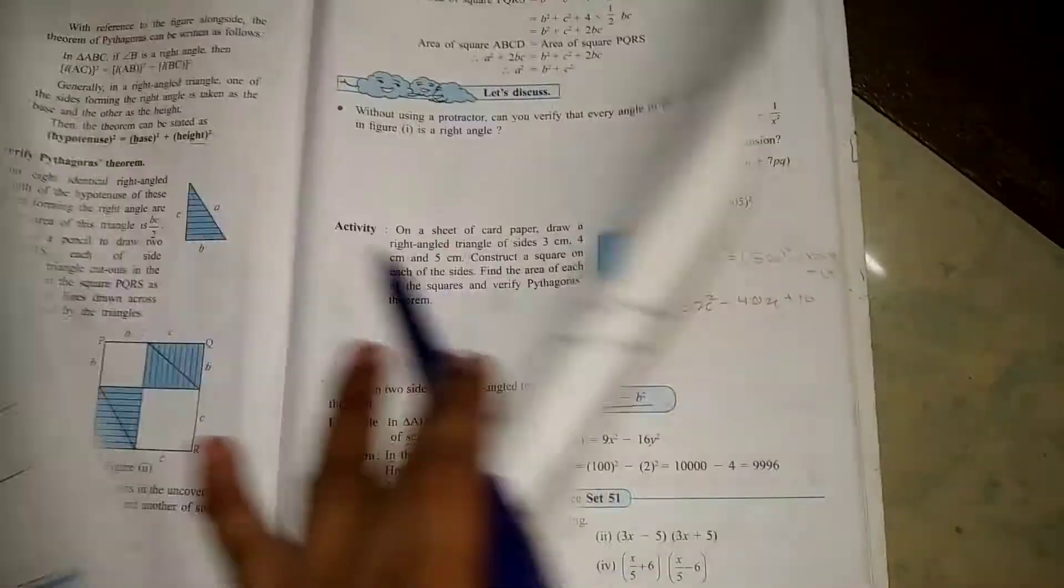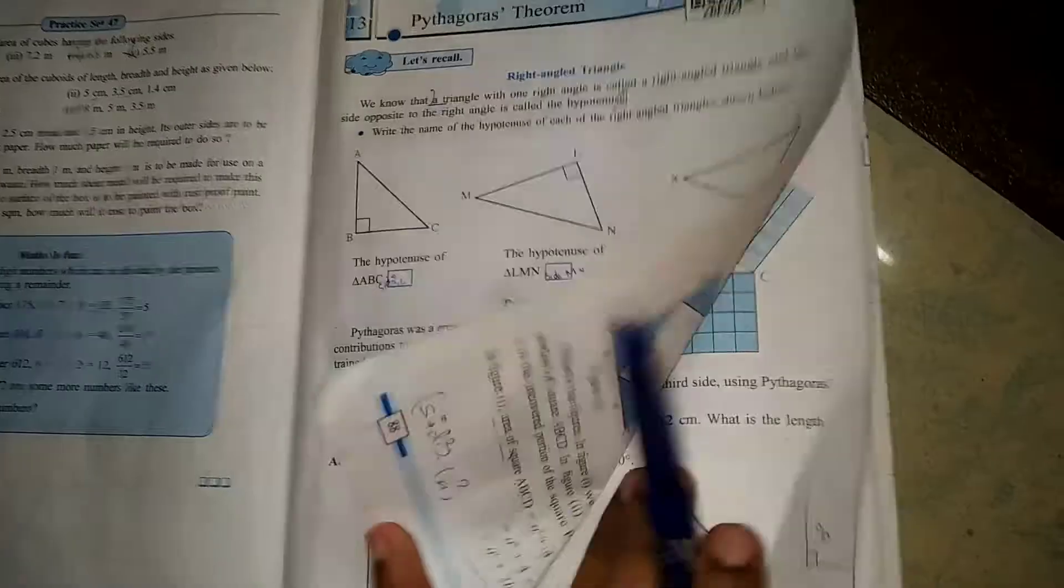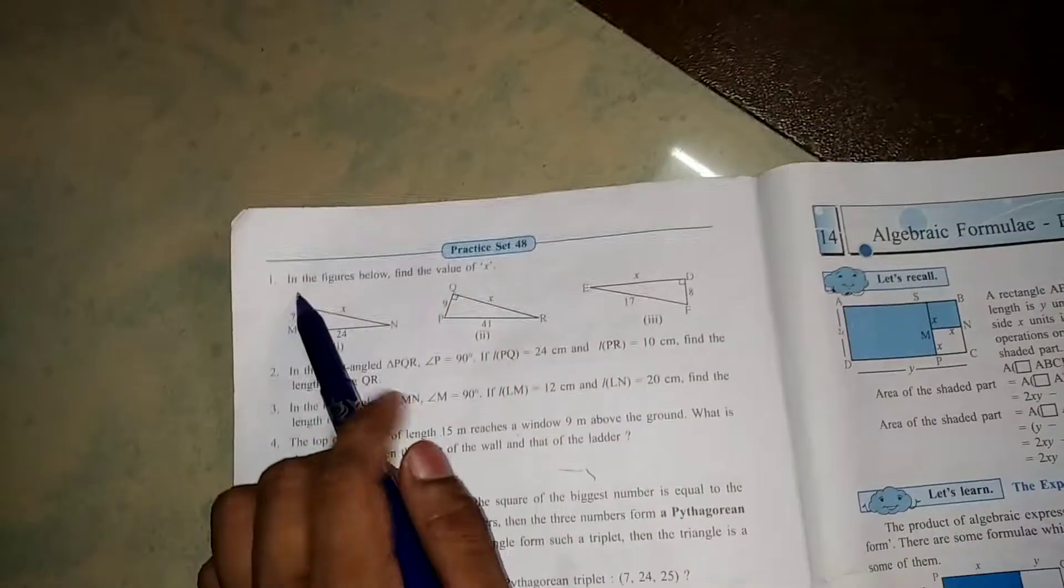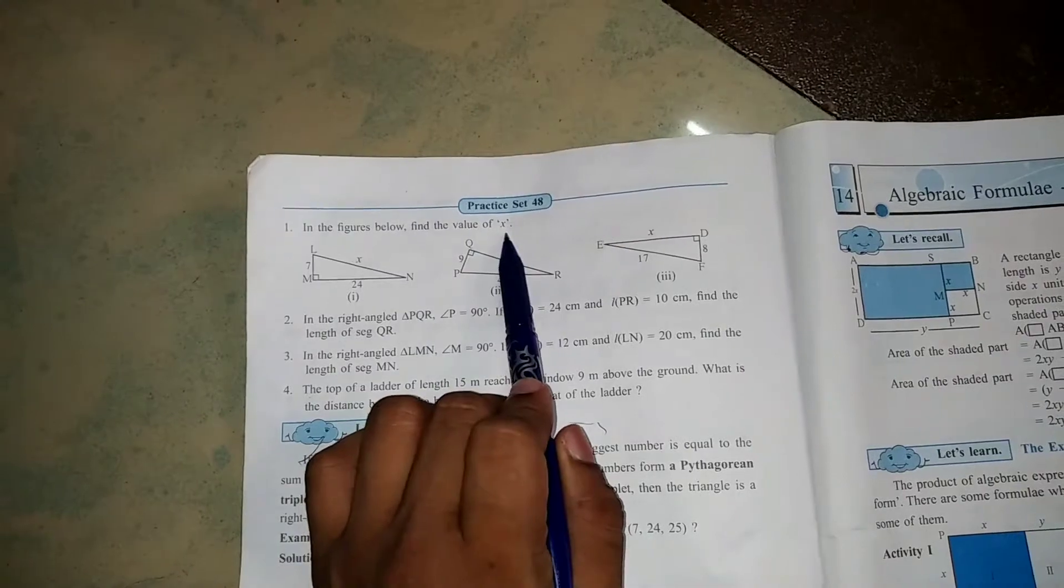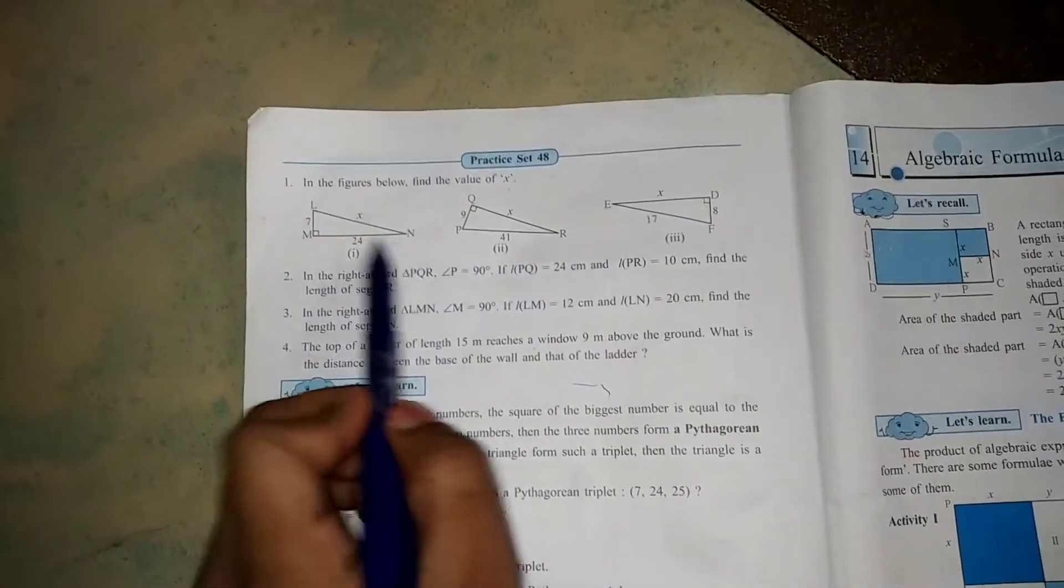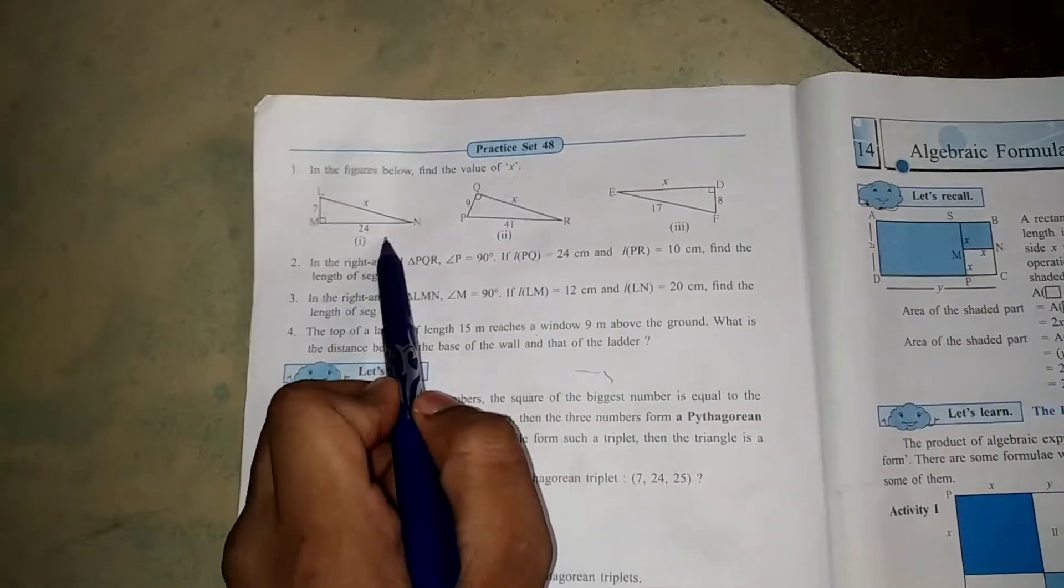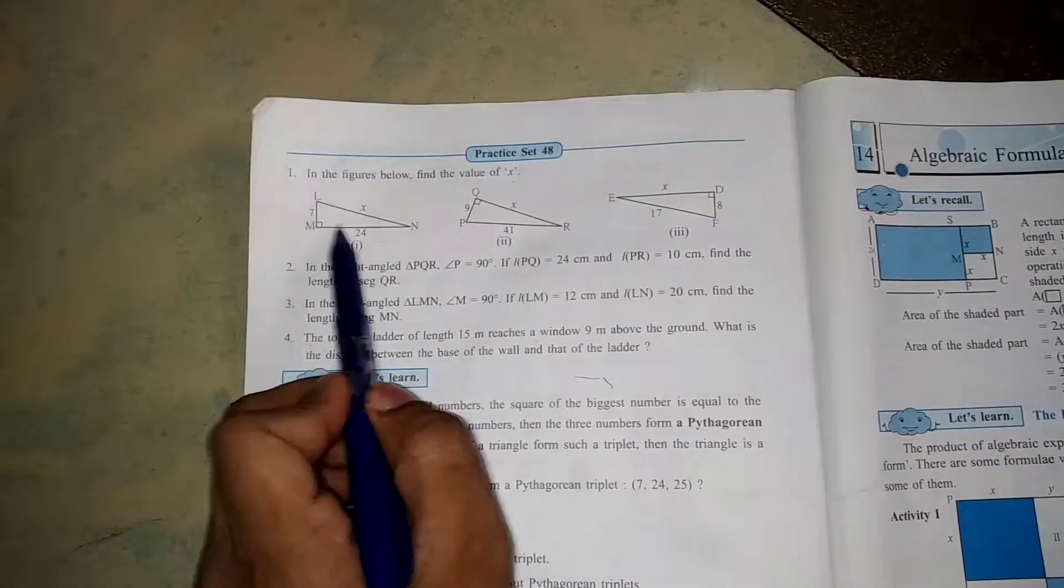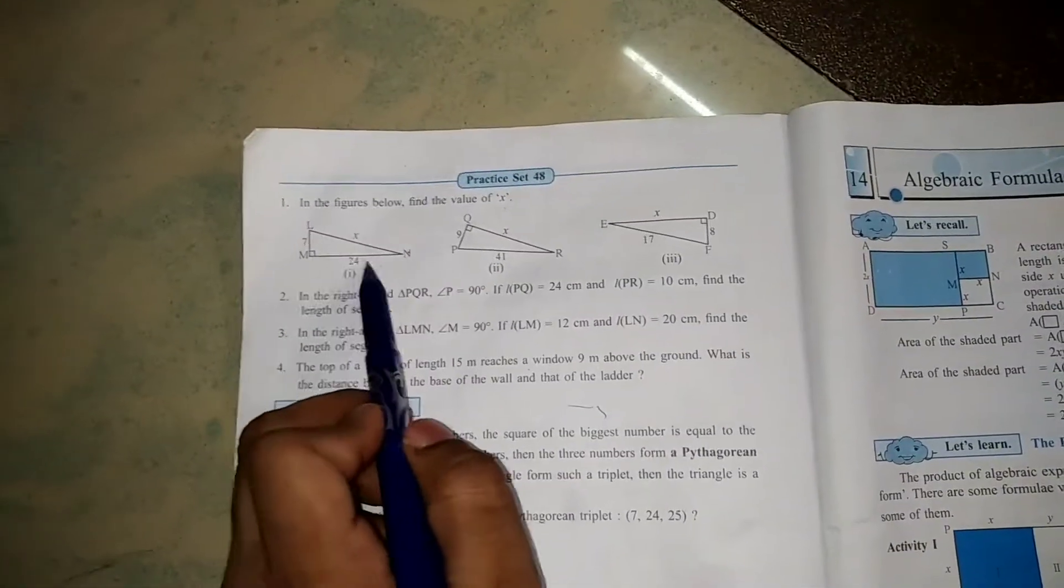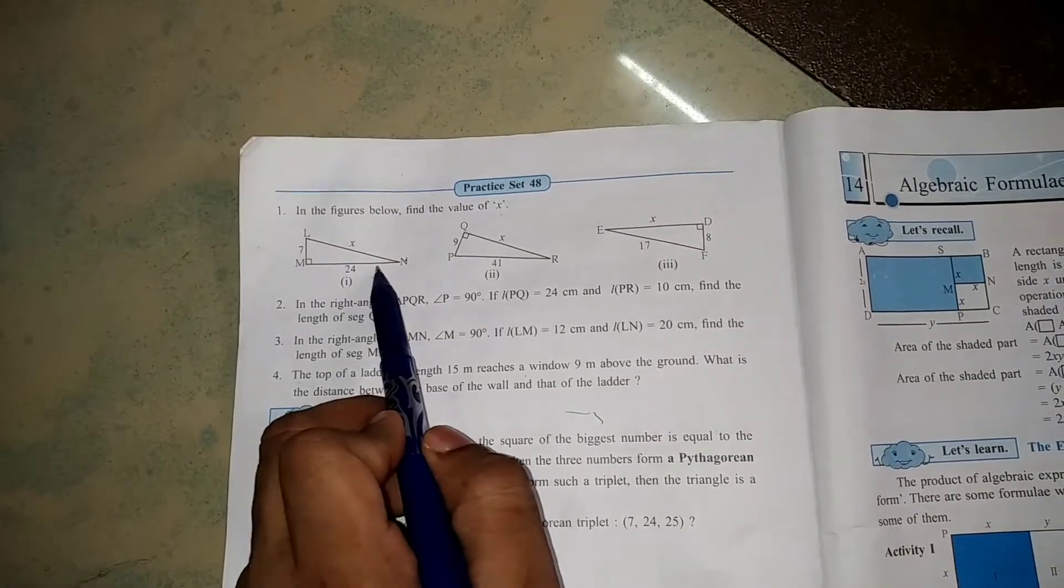Let's start how to solve this sums, this chapter Pythagoras Theorem. In the figure below, find the value of X. There is a diagram given in this textbook. We have to find the X value. This is your Pythagoras Theorem, this is your 90 degree angle.